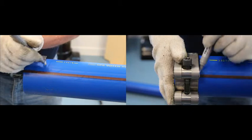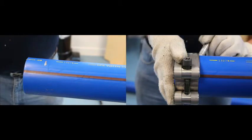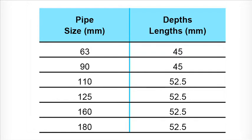For the straight couplers, mark the required depth from the ends of the pipes to be joined as indicated in the following table.